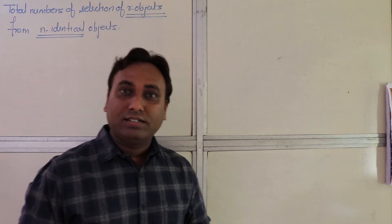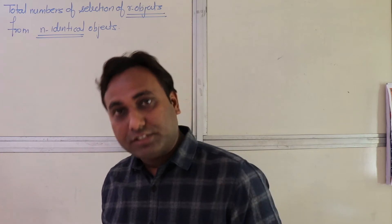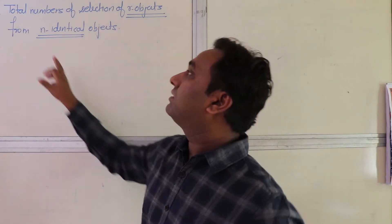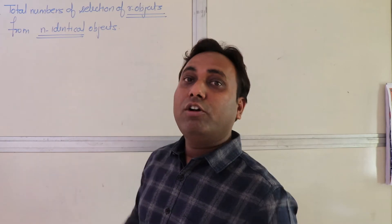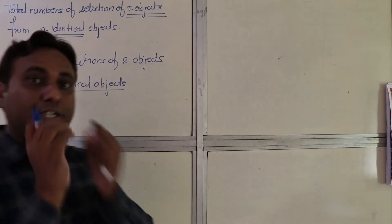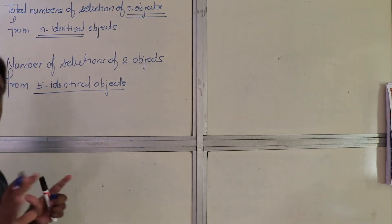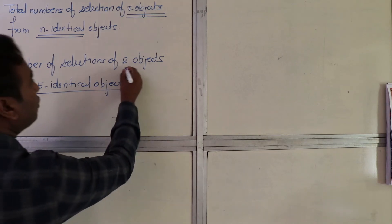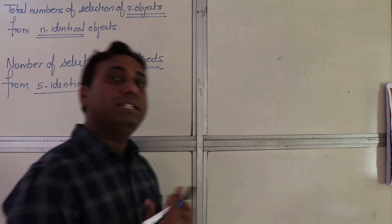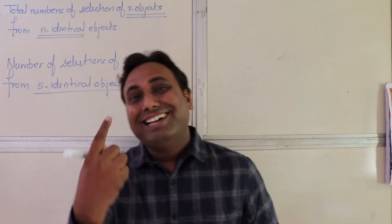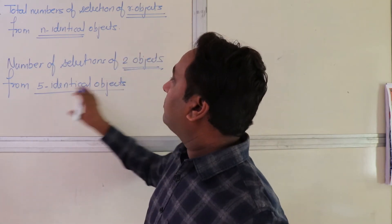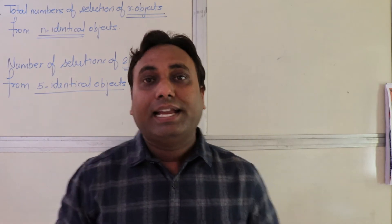Today we are going to learn how to find the number of selections of r objects from n identical objects. If things are identical — exactly the same — how many number of selections will you have while choosing two objects from five identical objects? Identical means totally, exactly the same. If we have 5 identical objects and we have to choose two, there is only one way to choose two identical objects from five identical objects.